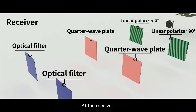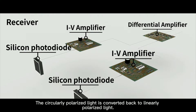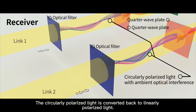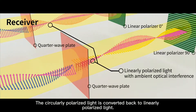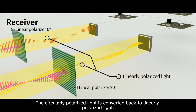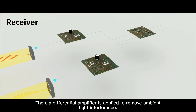At the receiver, the circularly polarized light is converted back to linearly polarized light. Then, a differential amplifier is applied to remove ambient light interference.